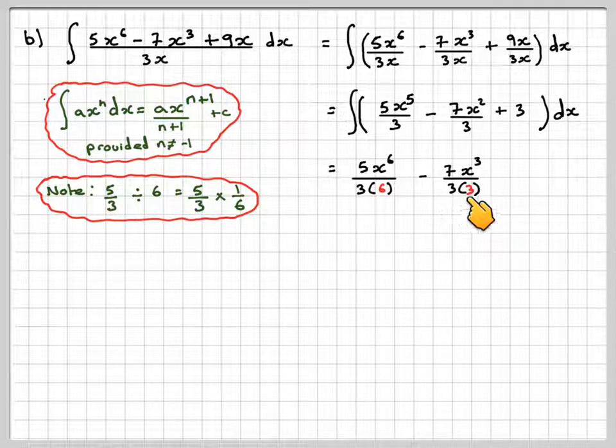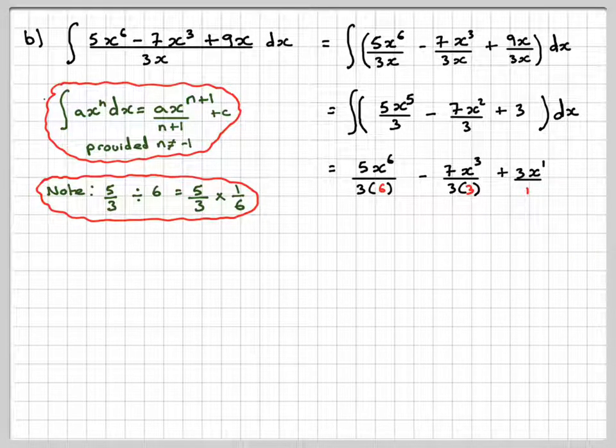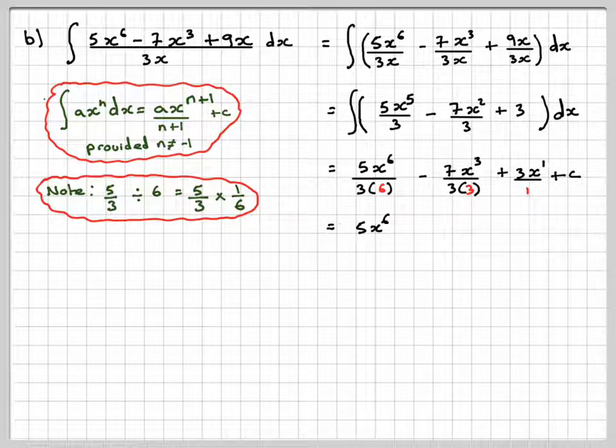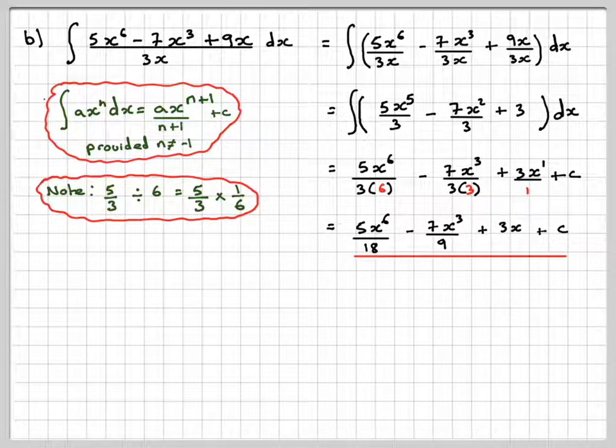So the next one will become -7x³/(3×3) + 3x¹/1 + c. Simplifying, that gives me 5x⁶/18 - 7x³/9 + 3x + c.